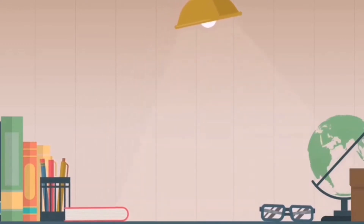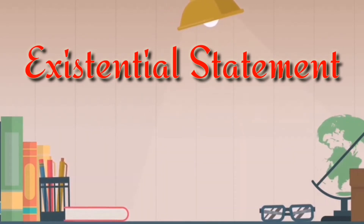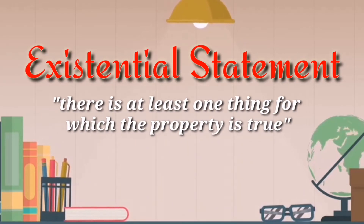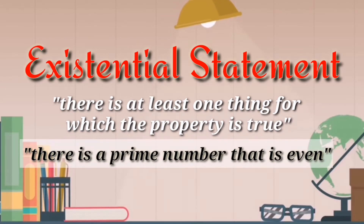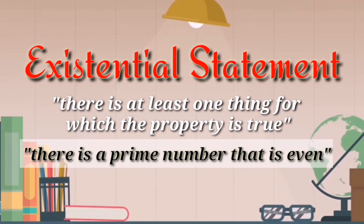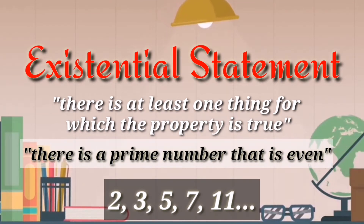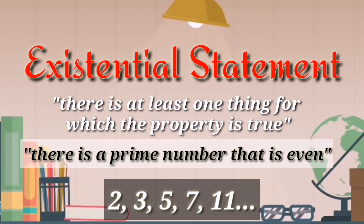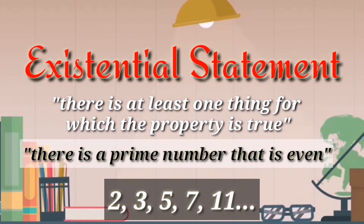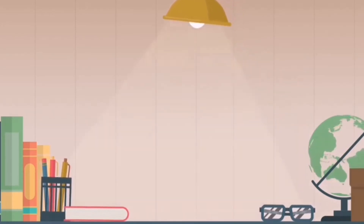Given a property that may or may not be true, an existential statement says that there is at least one thing for which the property is true. For example, there is a prime number that is even. The prime numbers are 2, 3, 5, 7, 11, and so on, and there is only one prime number that is even — that is 2. Therefore, the statement is an existential statement because there is at least one thing that is true. Later, we are going to define each of the statements carefully.